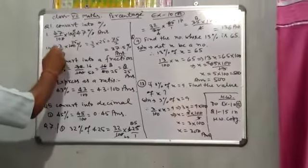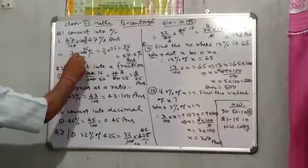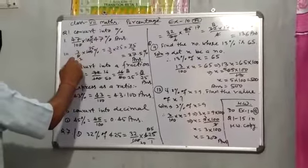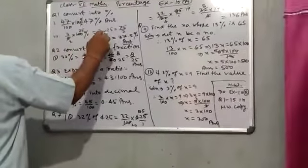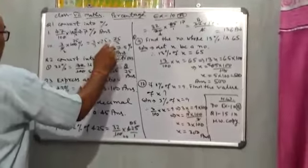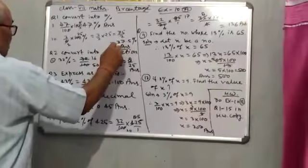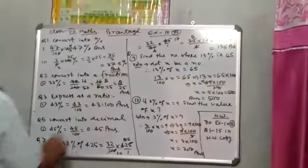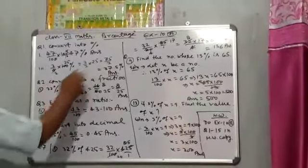Third part: 3 upon 8 into 100%. Therefore, it will be equal to 3 upon 2 into 25, that is 75 upon 2, which will be equal to 37.5%. That is the correct answer.